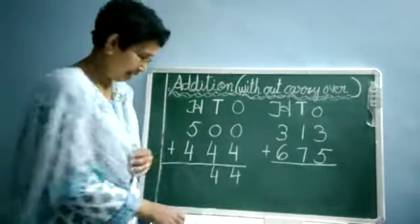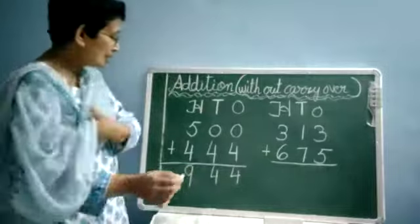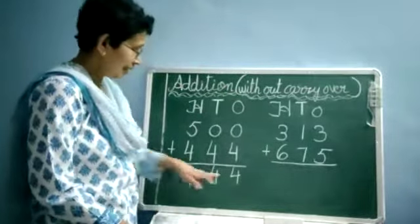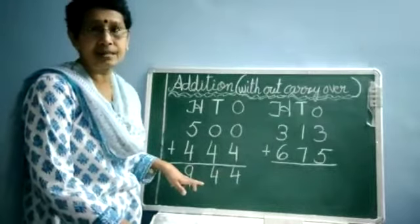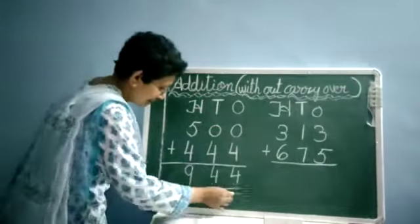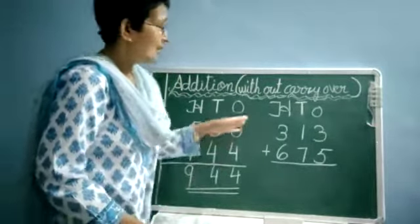So 500 plus 444, our answer is 944. Simple addition. After that, what you have to do, underline the answer. After every answer, please underline your answers.